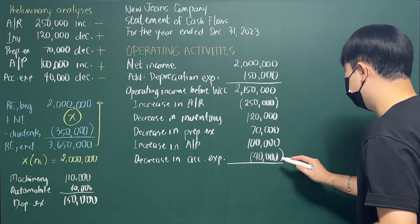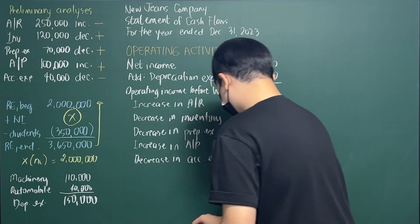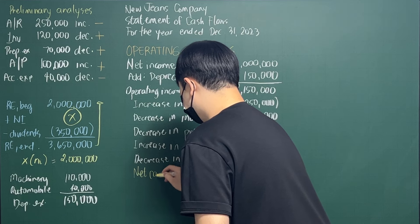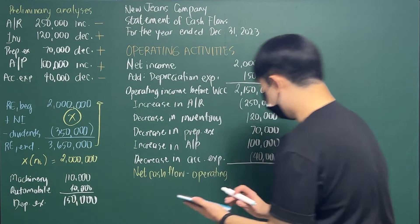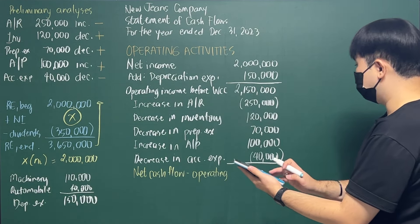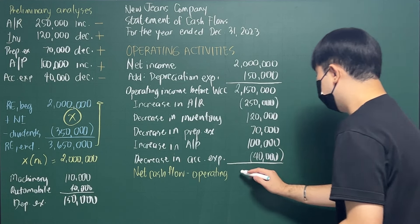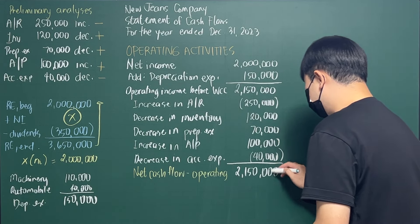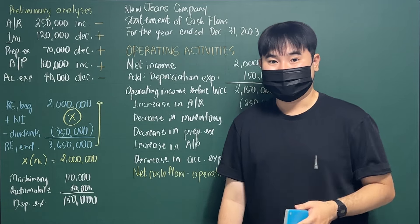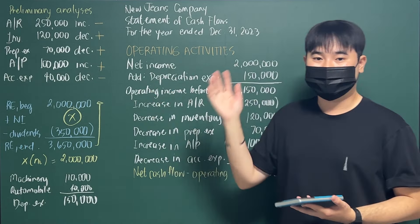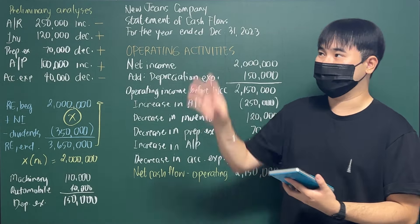Doing the math: $2,150,000 minus $250,000 plus $120,000 plus $70,000 plus $100,000 minus $40,000 gives us net cash flow from operating activities of $2,150,000. Operating activities relate to net income, non-cash expenses, and working capital represented by current assets and current liabilities. Now let's go to investing activities, which relate to the non-current assets section of the statement of financial position.